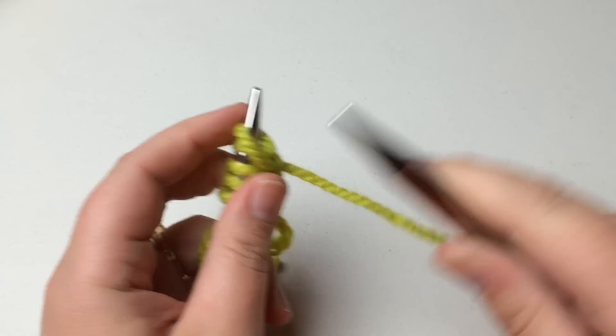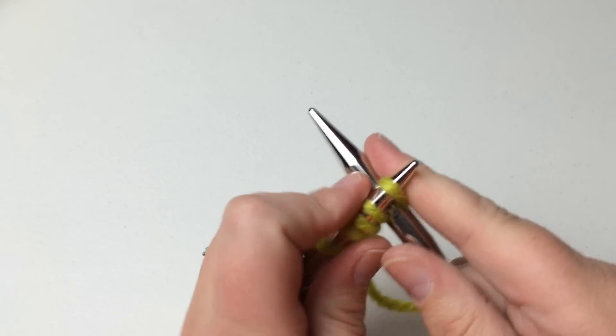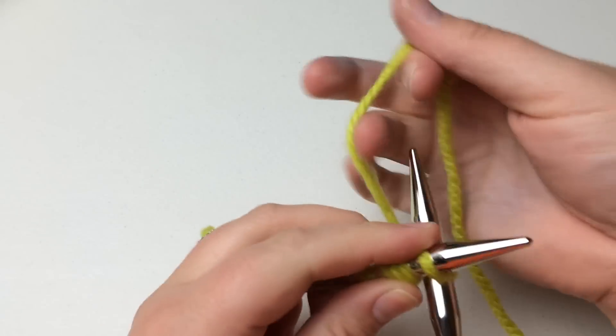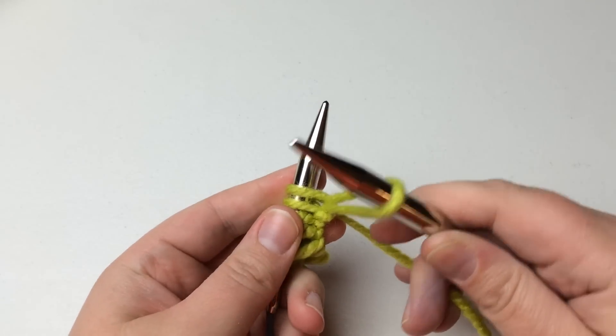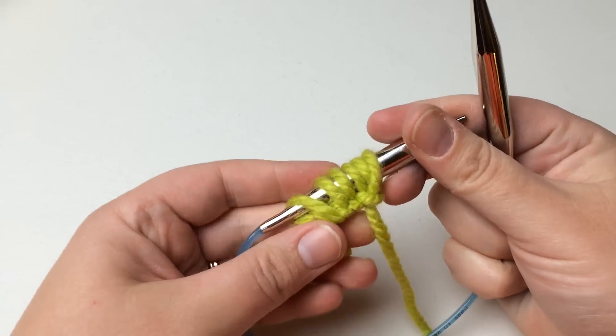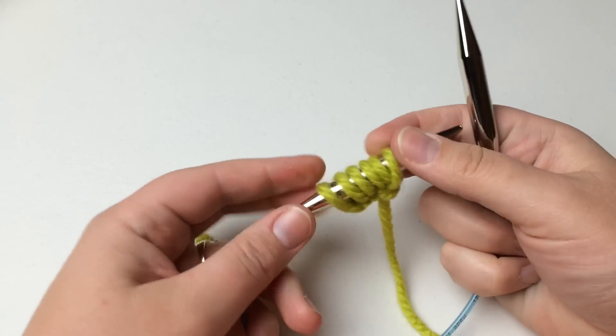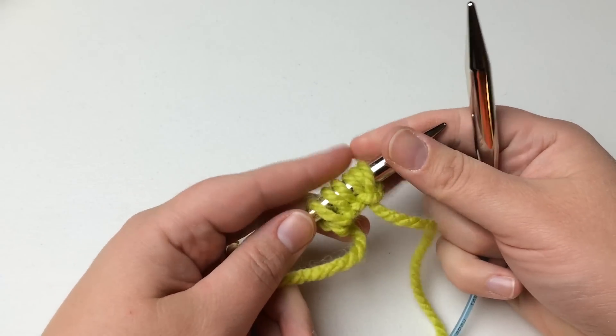Yarn over, pull it out, twist and insert. So we have now casted on six stitches and I hope that helps you with the cable cast on.